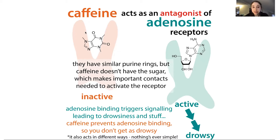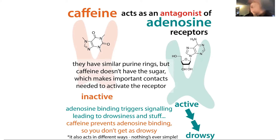Caffeine is non-selective, so it binds a bunch of different adenosine receptors, and it binds pretty weakly. It's a competitive inhibitor — it's not stuck permanently in there, it can come in and out, so the effects of caffeine will wear off and you're not permanently harming these receptors. Caffeine also works in other ways I'm not going to go into, so it's not quite that simple — it can activate different pathways to help promote that perkiness.